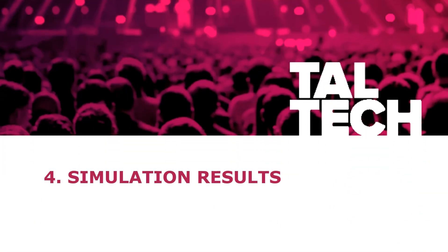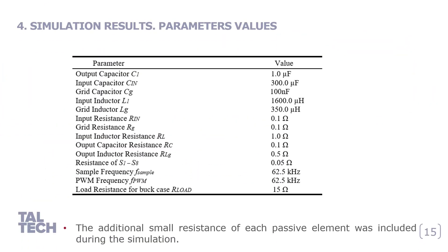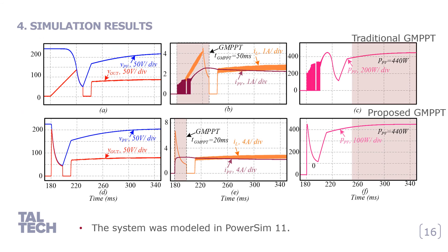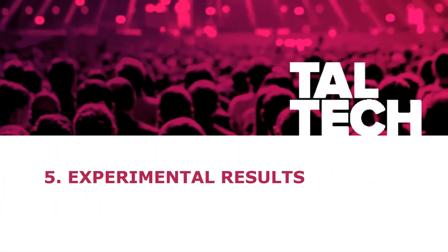The proposed method was first confirmed by simulation results. The parameters of the system can be seen on this slide. We also added the equivalent resistance of the passive elements in the model, and we used PowerSim for simulation. As a result, the proposed technique showed reduced time of the global MPPT. However, the current spikes in inductors were increased, and in some cases caution is needed because these spikes can damage elements of the converter. The simulation results confirmed the proposed method.